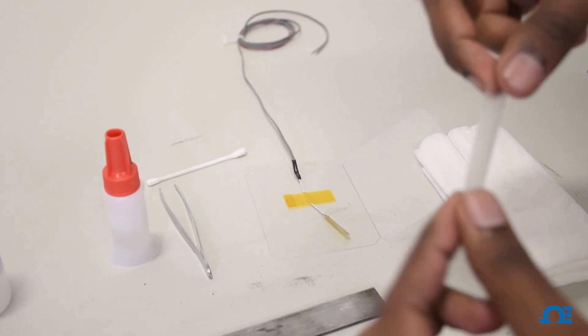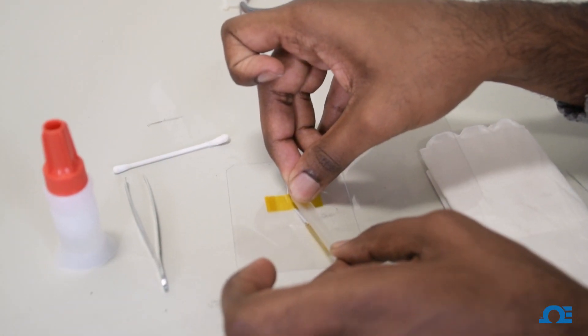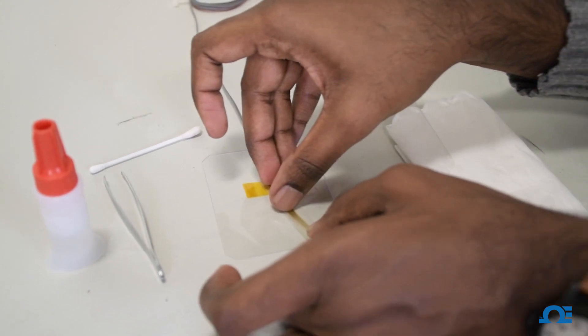Now I'm going to take a small piece of tape and apply it over the surface of the strain gauge uniformly, just like that.